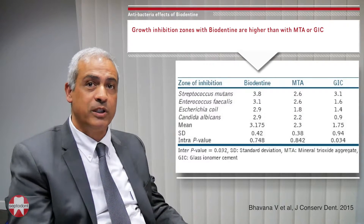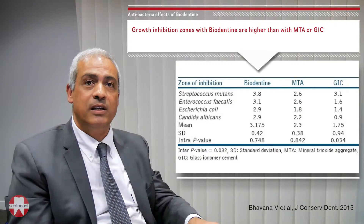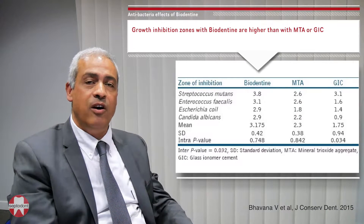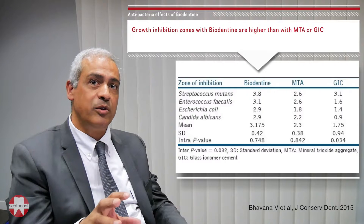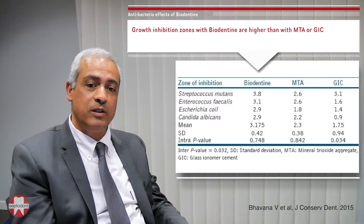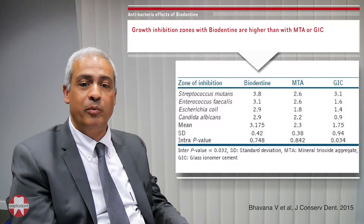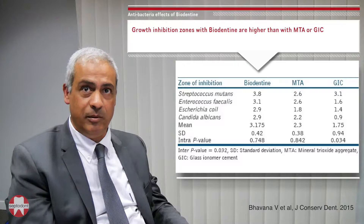As shown on this slide, the highest growth inhibition zone was obtained with Biodentine compared to MTA or glass ionomer cement, across different bacterial strains.